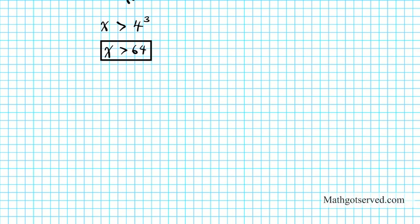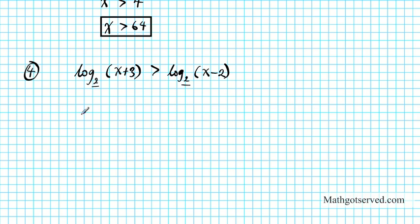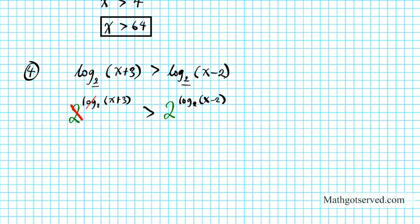Now let's work on problems that are slightly more complicated. Question 4: what if we have the logarithmic inequality log base 2 of x plus 3 is greater than log base 2 of 2x minus 2? The base is 2, so I'm going to put a big 2 on both sides. On the left side the 2 and the logarithm cancel out giving x plus 3. On the right side the log and the exponent cancel out giving 2x minus 2.